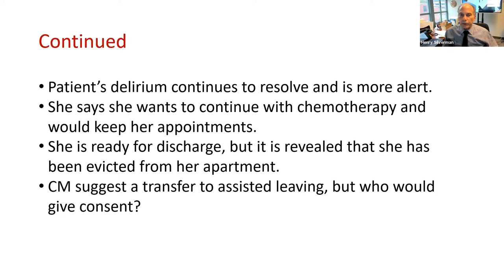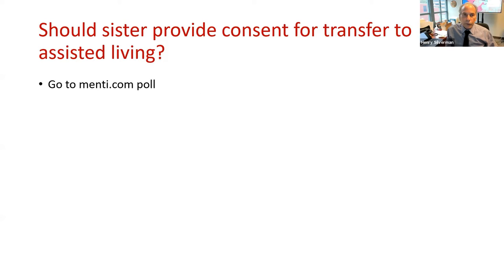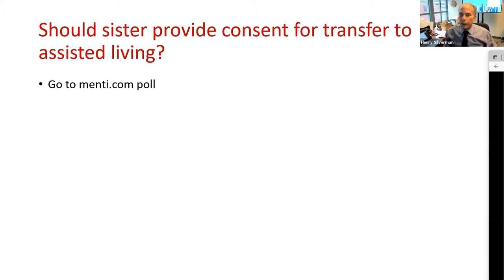The patient's delirium continues to resolve and she becomes more alert. She says she wants to continue with chemotherapy, would keep her appointment, and she wants to live. She is ready for discharge, but it is revealed that she has been evicted from her apartment. Now we're dealing with what would constitute a safe discharge. Case managers suggest a transfer to assisted living — but who would give consent at this point? Should the sister provide consent for a transfer to assisted living?